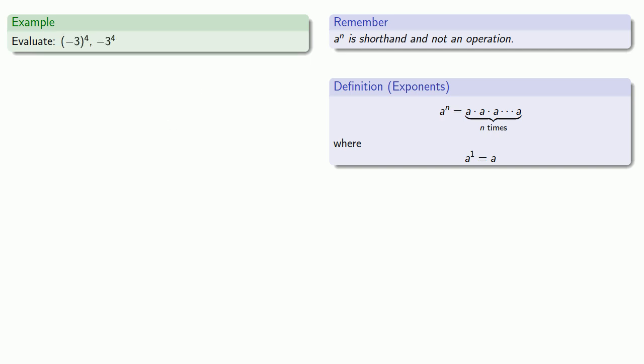This idea that exponents are shorthand is very important for evaluating expressions with signed numbers. For example, parenthesis negative 3 to power 4 versus no parenthesis negative 3 to power 4.